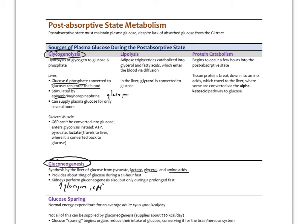Skeletal muscle stores glycogen, but when broken down, it can only be used for local energy within that muscle. If the muscle works anaerobically, it produces lactate, which travels back to the liver via the Cori cycle to be converted back to glucose via gluconeogenesis. A second source of plasma glucose, especially with more prolonged fasting, is lipolysis: adipose triglycerides are broken down into glycerol and fatty acids, and the liver converts that glycerol back to glucose.